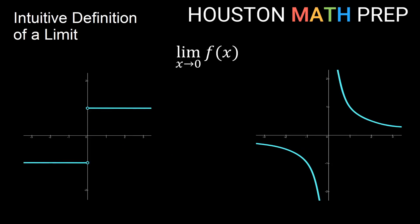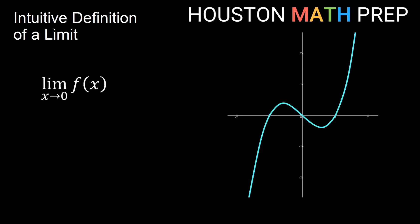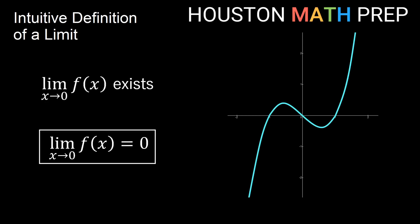Let's go back and look at each of these and decide if they have a limit as x approaches 0. For this first smooth curvy graph that travels through 0 with nothing strange going on, the idea for the limit is: do I approach a specific y value as I get closer and closer to 0 from the left side and the right side? Approaching from the left, I get closer to the origin — a y value of 0. The same from the right side. So the limit as x approaches 0 of this function exists, and that limit is 0.